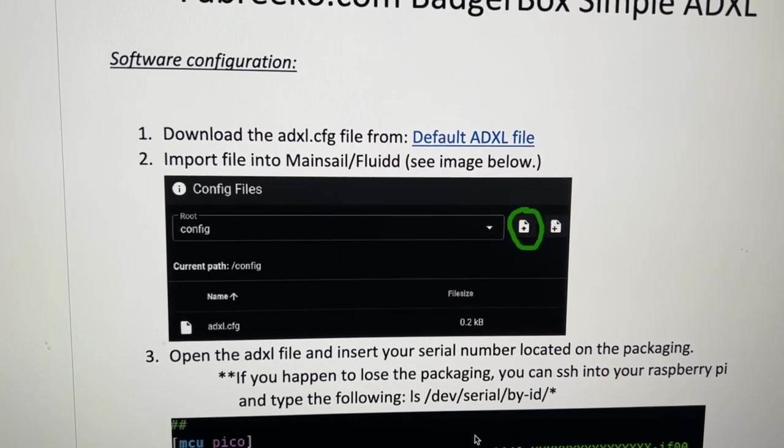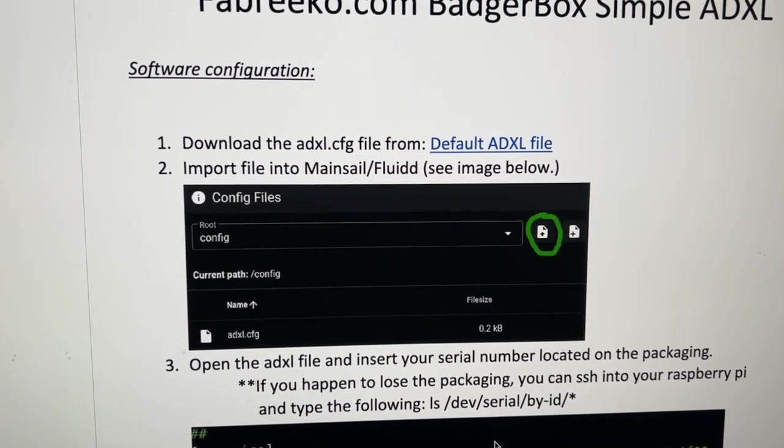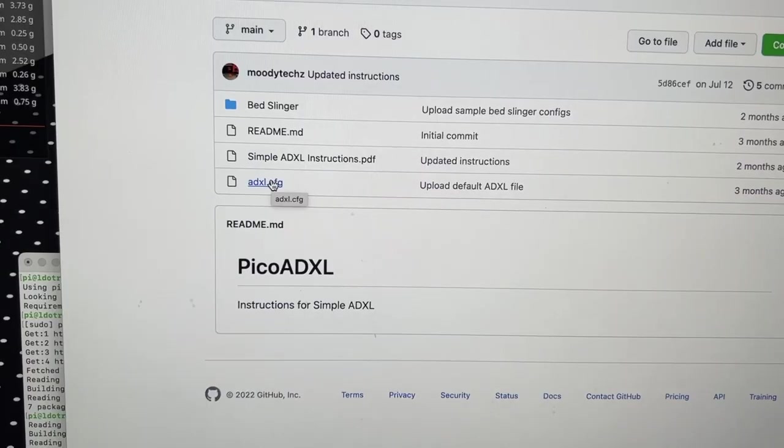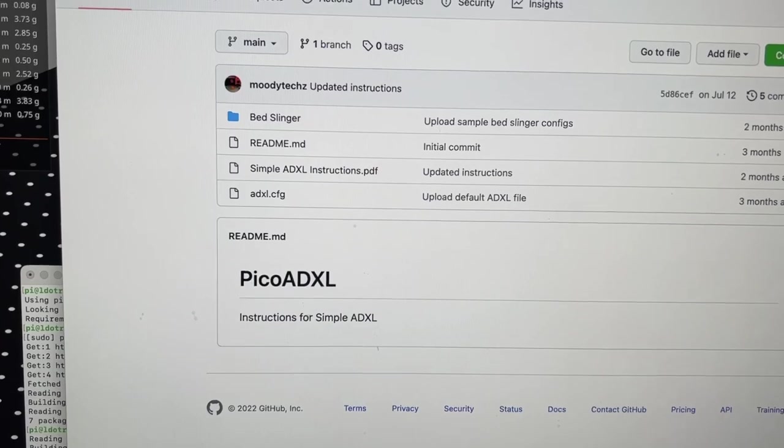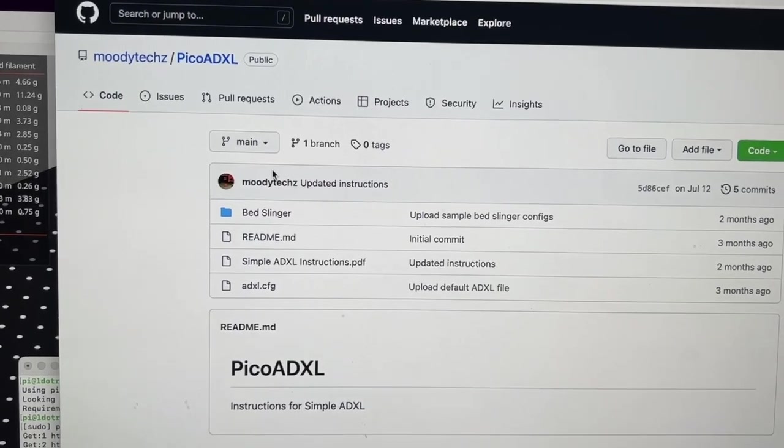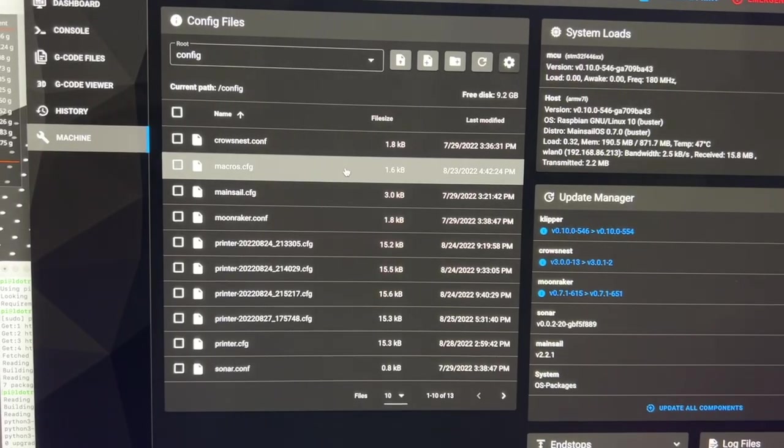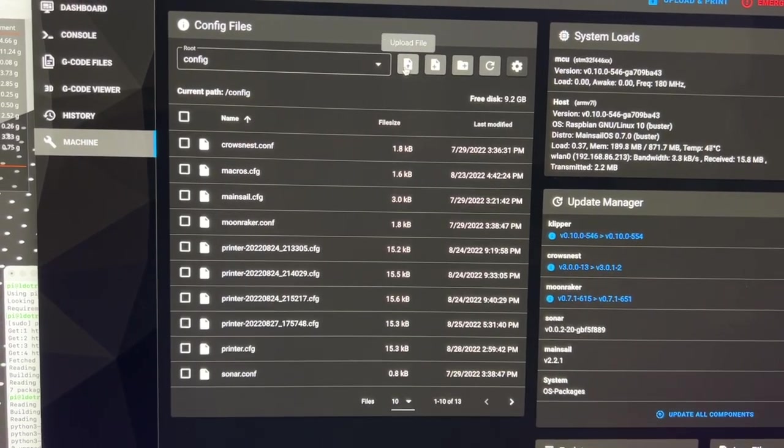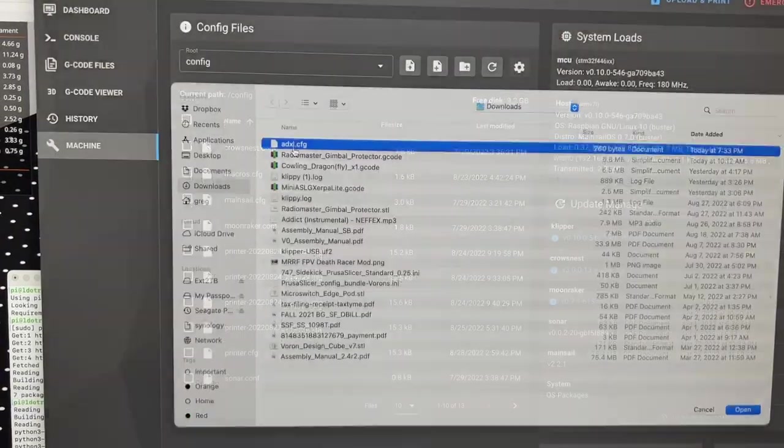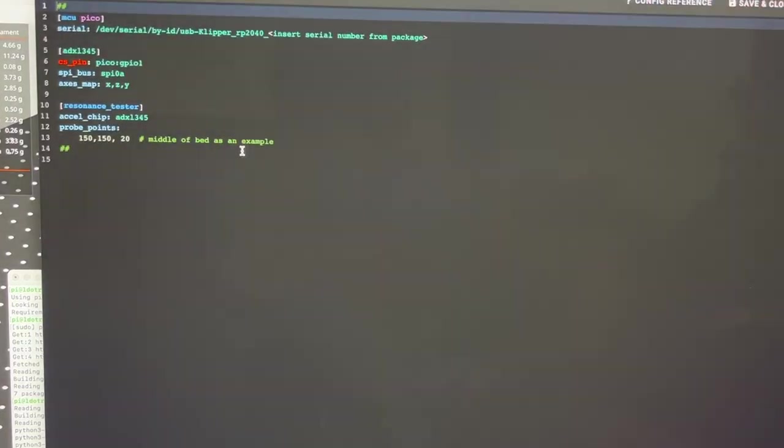Next up I'm just going to be downloading the ADXL file and connecting it to Klipper. You can find the ADXL CFG file right in the GitHub and I will include the link in the description of the video. I've connected to Klipper through Mainsail and then I'm going to go ahead and upload a file, the one that I just downloaded. And then I can click on it and I can view it.